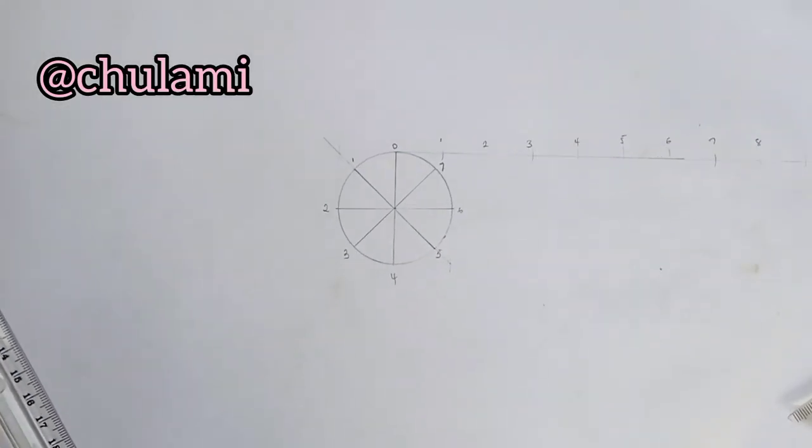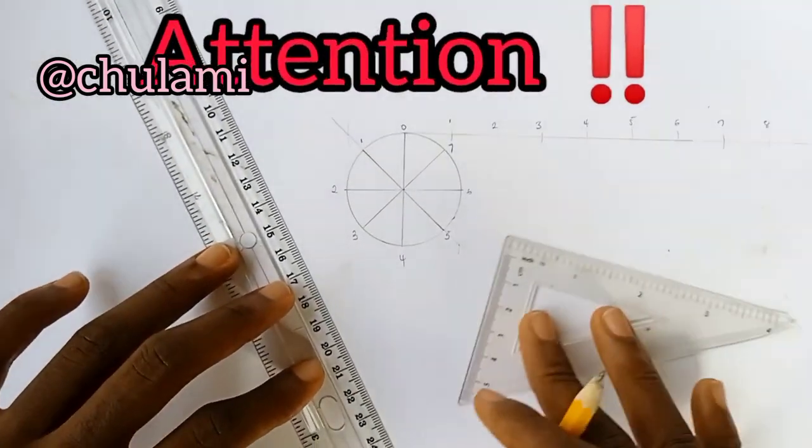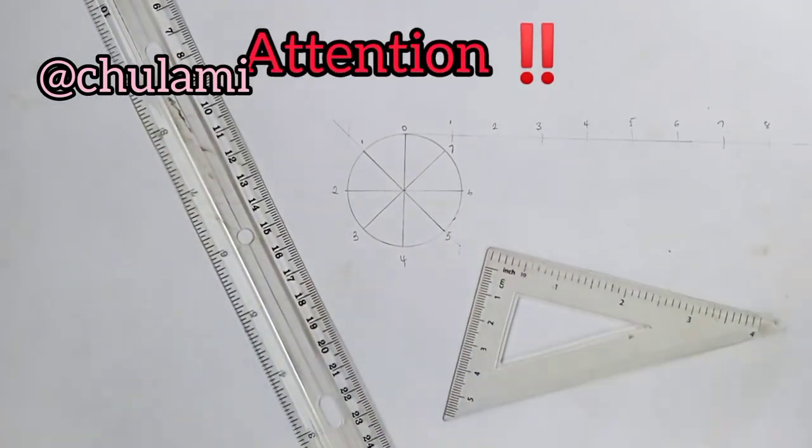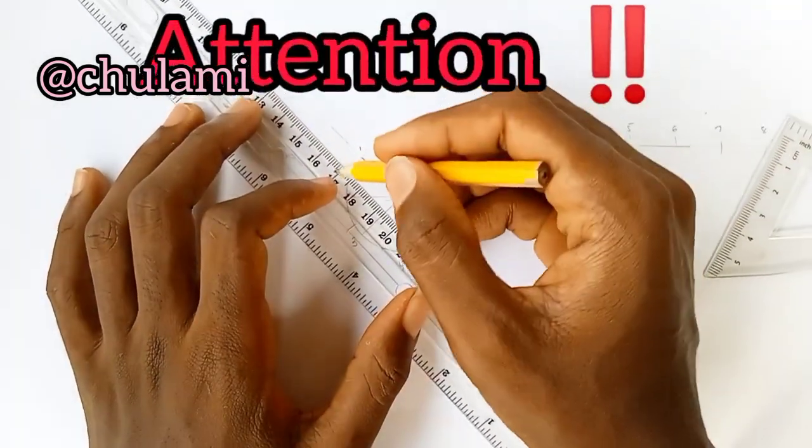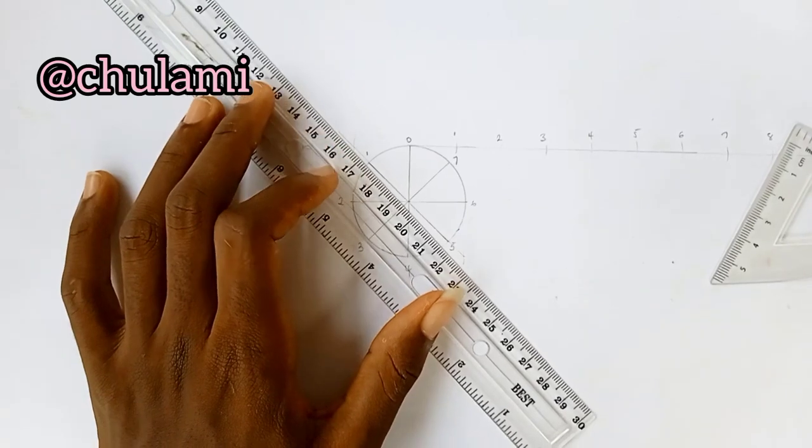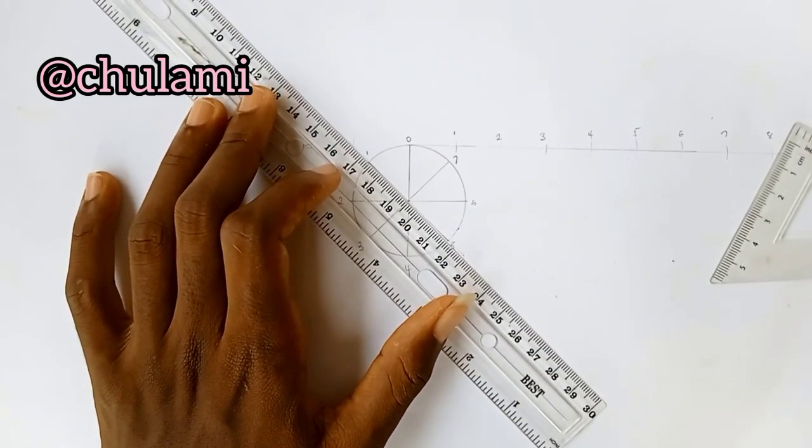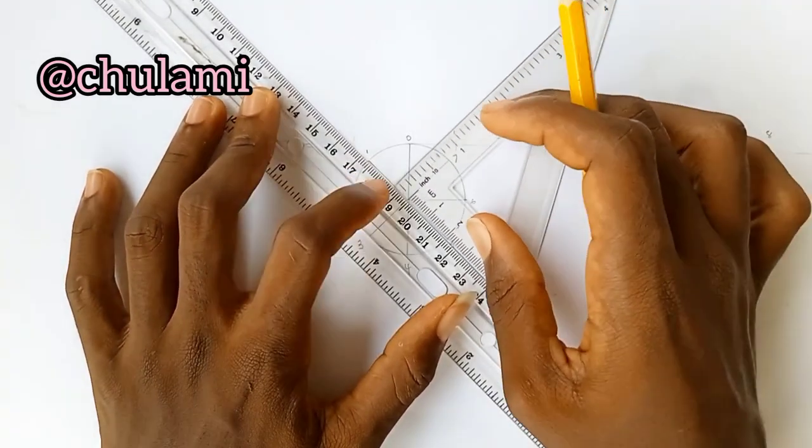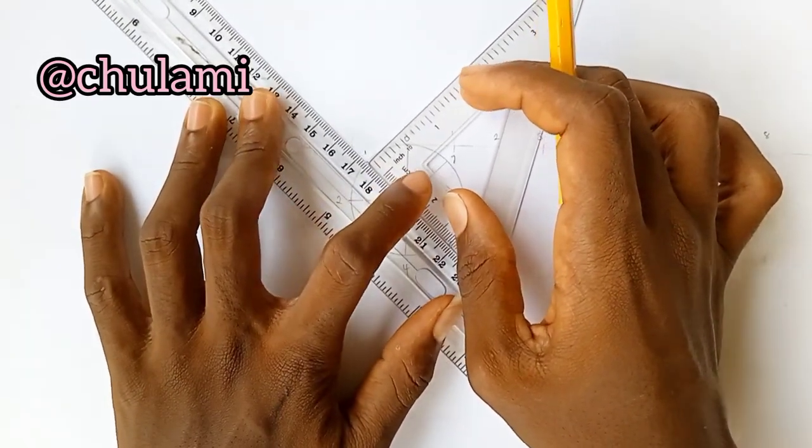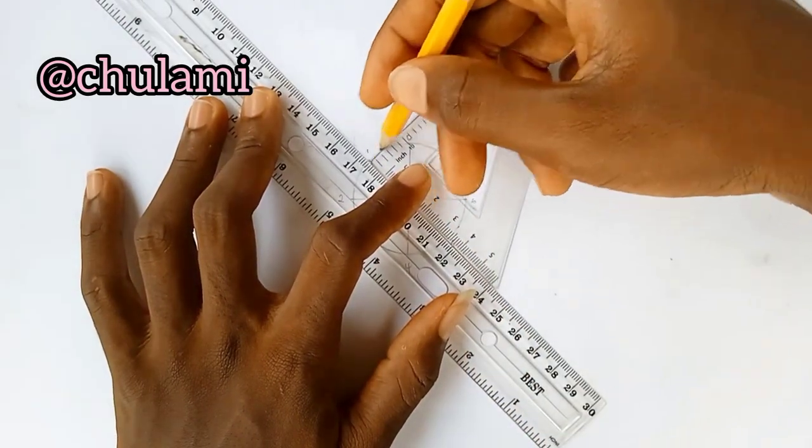Now we are done with our numbering. Next for us to do is we're going to make use of these two instruments. Please watch very carefully. This is one. So at one you put your ruler this way and then with your set square as you touch this one here, you draw a straight line. This line should be very faint please.